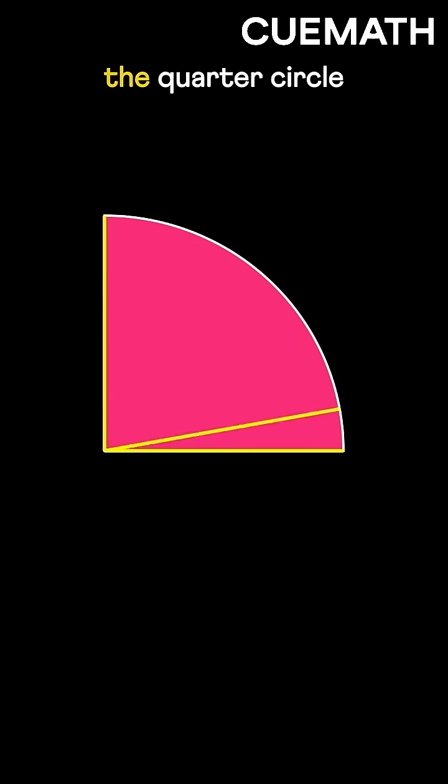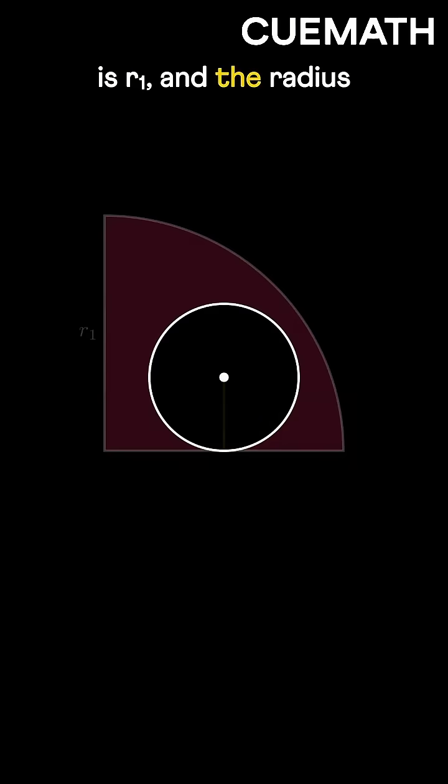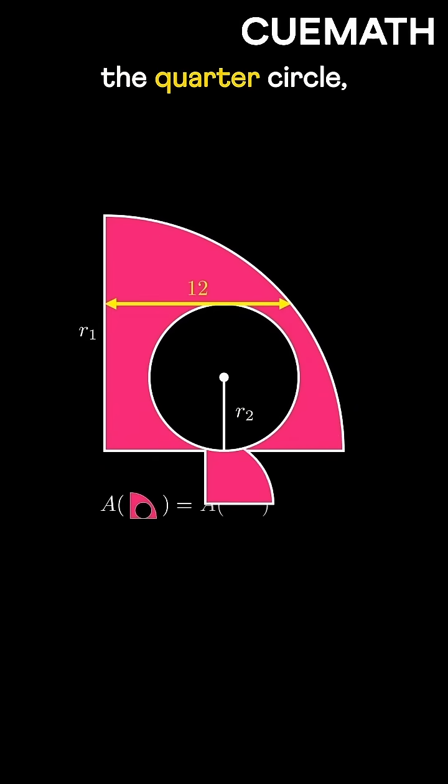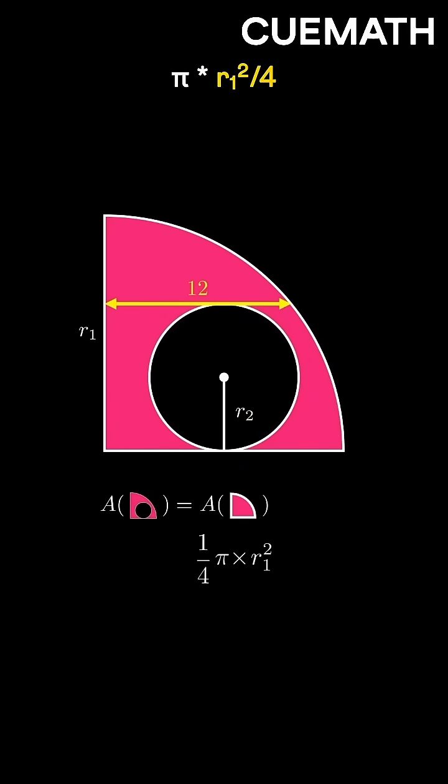Say the radius of the quarter circle is R1 and the radius of the smaller circle is R2. The shaded area is the area of the quarter circle, pi times R1 squared by 4, minus the area of the smaller circle, pi times R2 squared.